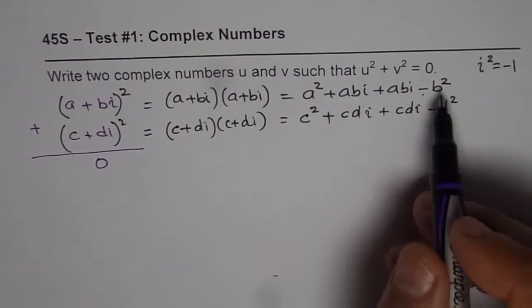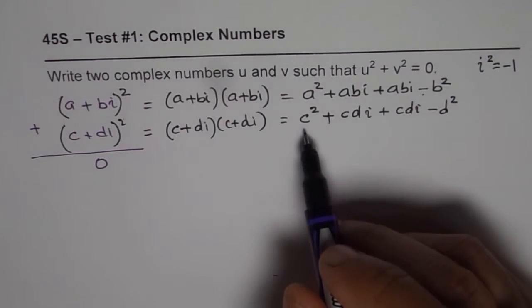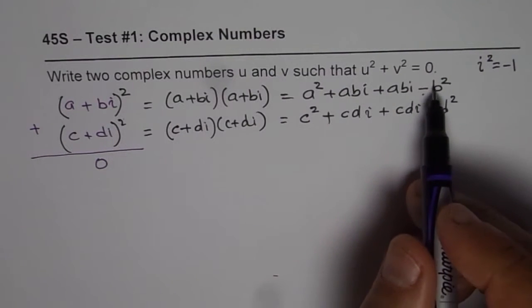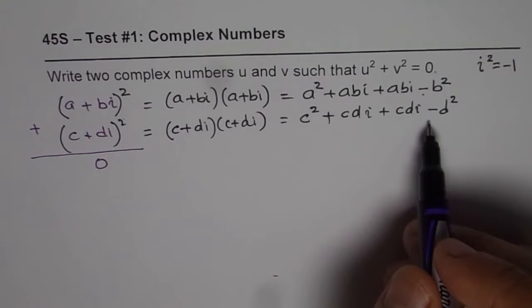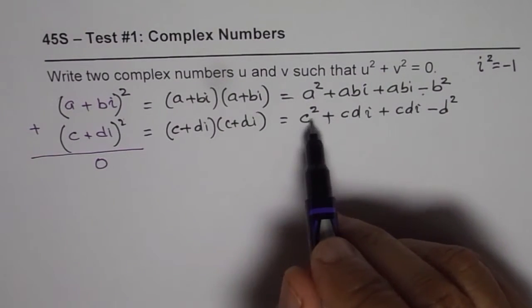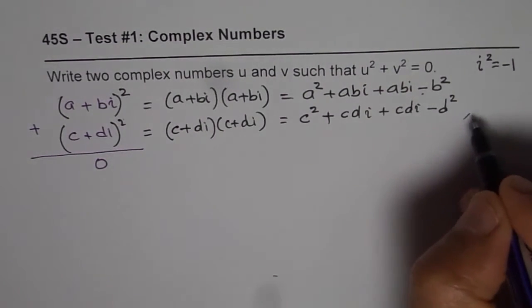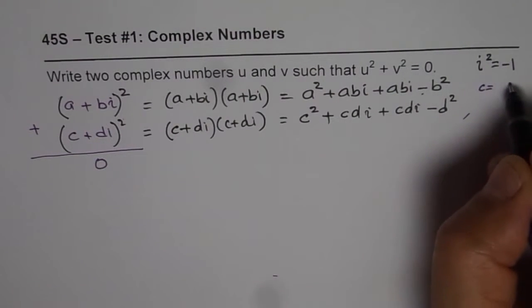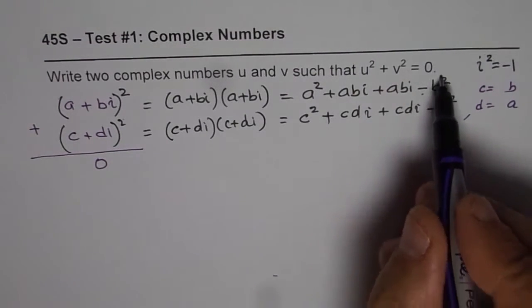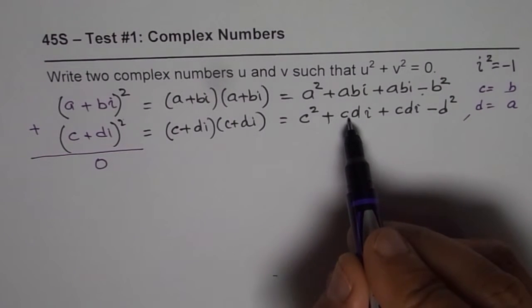Now, if you compare these values to make it zero, what should we do? We should make, if I make d as negative of b, then can it work? No. But if I make d as a, I hope it will work. This minus, right? And c as b, then we get minus here. c as b.